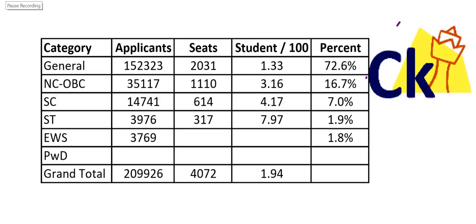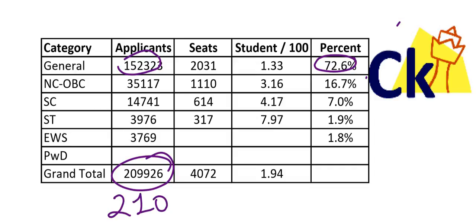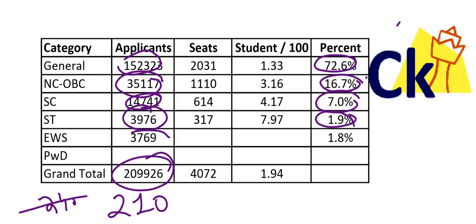In this video we'll talk about the conversion ratio for all category students in the CAT exam. In the general category, number of applicants are 1,50,000 which is almost 72% of all applicants. Total 2,10,000 people gave the CAT exam last year. OBC is 35,000 which is 16%, SC 7%, ST 1.9%, EWS 1.8%.